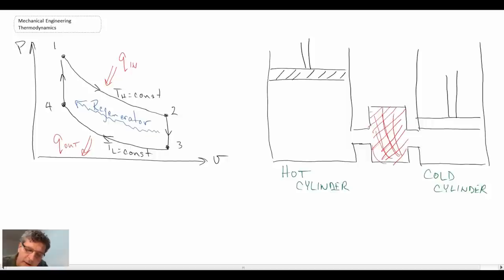Now typically regenerators have the characteristic of high thermal mass. They're able to store thermal energy. It could be constructed out of something as simple as steel wool or a porous metal matrix that does not have high pressure drop when the gas goes through it, but it can still maintain thermal energy.